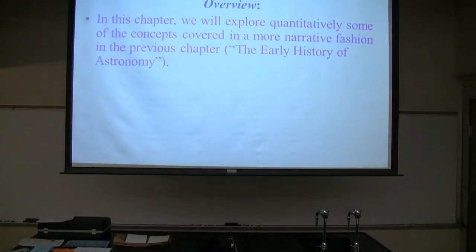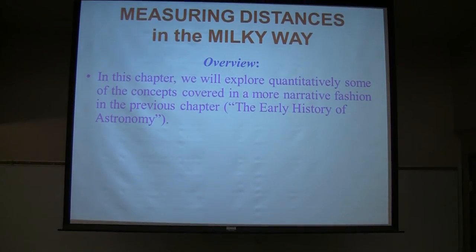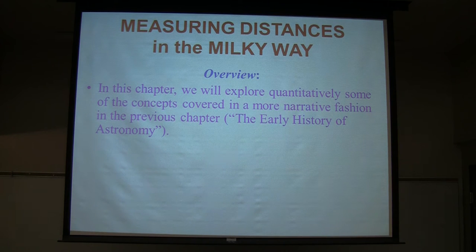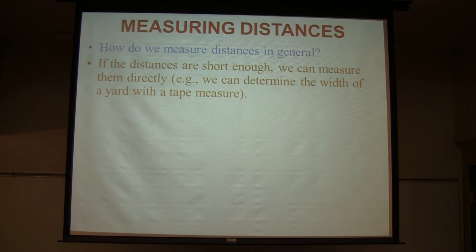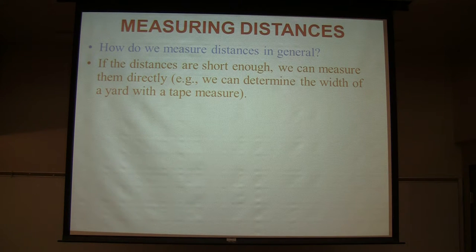We're going to look quantitatively at some of the things we went over in a historical manner last time in the early history of astronomy. How do we measure distances in general? It depends on how long a distance we're talking about. If we have short distances — if you want to measure the width of your front yard, all you need is a big long tape measure. But unfortunately, that doesn't work in any astronomical measurements, since astronomical distances are kind of by definition astronomical.